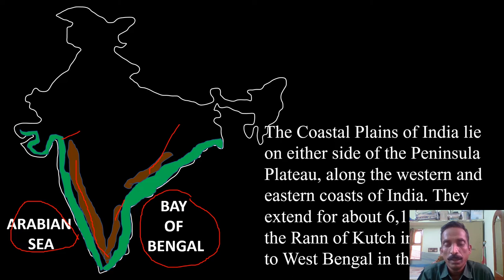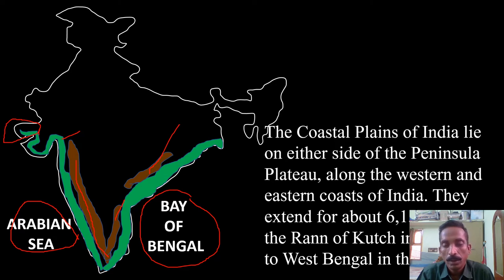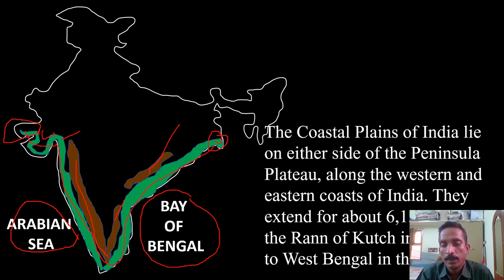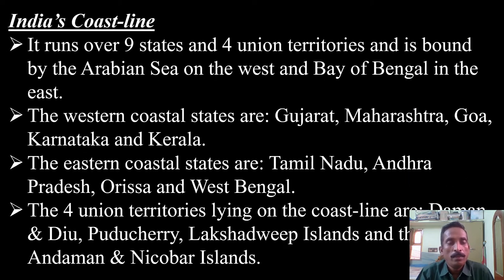The coastal plains of India lie on either side of the peninsular plateau along the western and eastern coasts. The eastern coast extends about 6,150 kilometers from the Rann of Kutch in Gujarat to West Bengal. It runs through nine states and four union territories, bounded by the Arabian Sea on the west and the Bay of Bengal on the east.